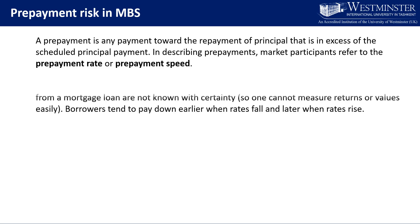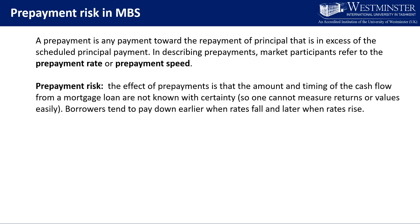So why is this a problem? Borrowers tend to pay down earlier when rates fall and later when rates rise. When interest rates are falling, borrowers may be repaying faster because they can borrow at a lower rate. So they repay the higher-rate loan that was originally issued by the bank and remortgage — in other words, reissue or reborrow at the lower rate. The effect of prepayment is that the amount and timing of the cash flow from a mortgage loan are not known with certainty, and it depends on the path of interest rates, whether they are going down or up.